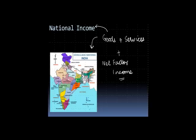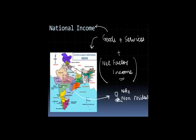Now, if I look at the definition — when I say net factor income — what will happen is that let's say some people are situated outside India. We normally call them non-residents. If these people are actually earning some income from India, that is reduced from the national income. But if these people are making some payments to people in India for some services, that is included in the national income. And when we actually take the difference between the payments and the receipt, that is added to the value of the goods and services produced in a country to arrive at the national income.